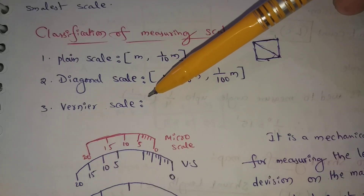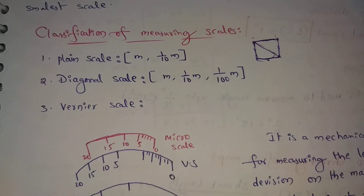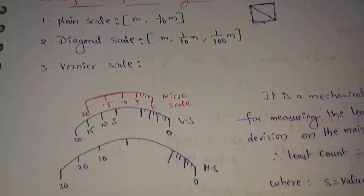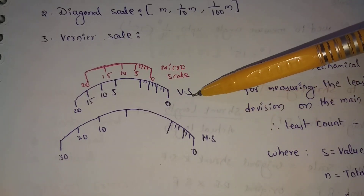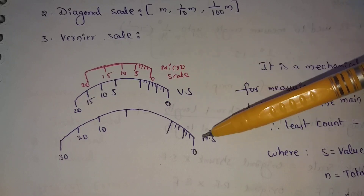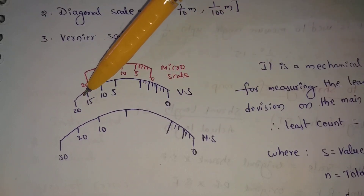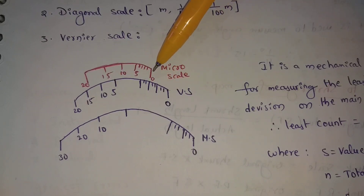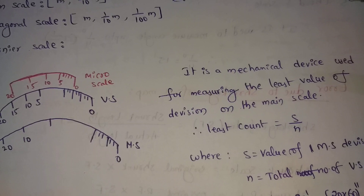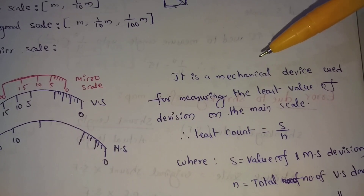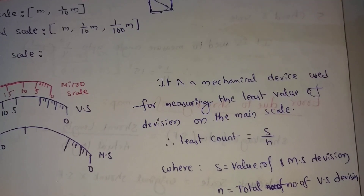Next is the Vernier scale. The Vernier scale provides accurate values by reading the smallest divisions. It is a mechanical device used for measuring the least value of division on the main scale, allowing us to measure the least values precisely.